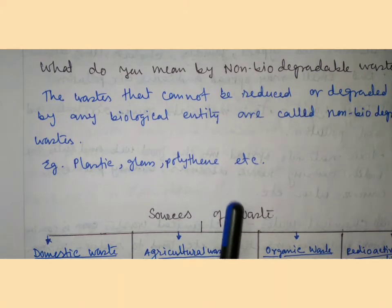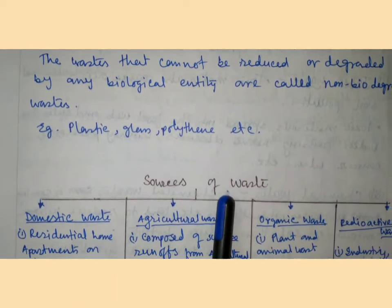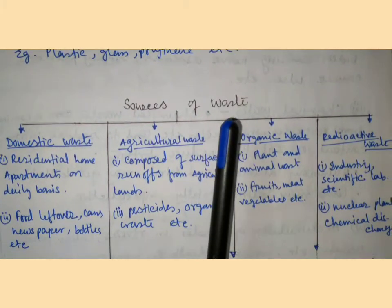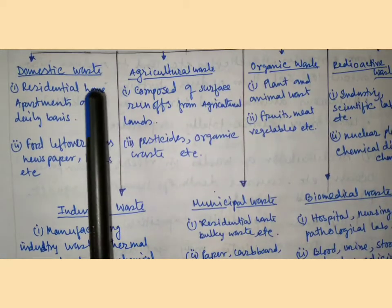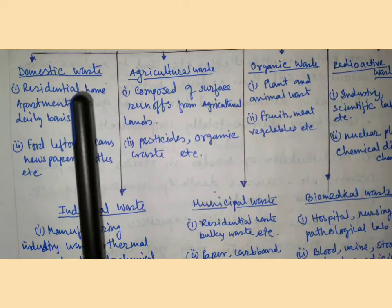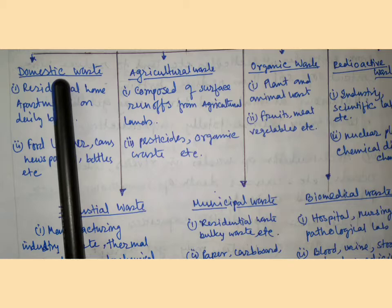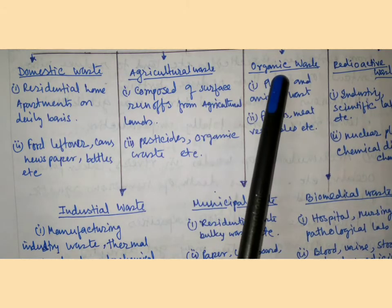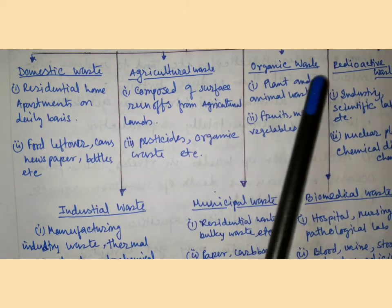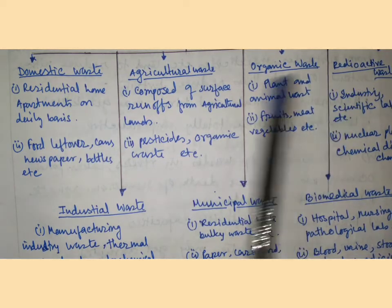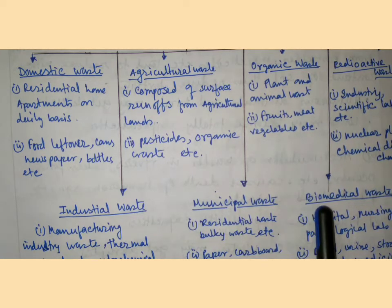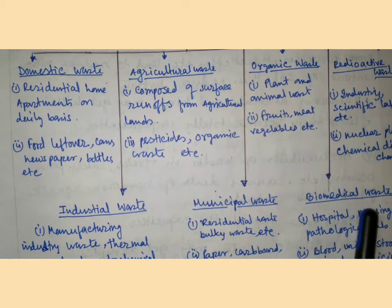Now, the sources of waste. The sources of waste are: domestic waste, agricultural waste, organic waste, radioactive waste, industrial waste, municipal waste, and biomedical waste.